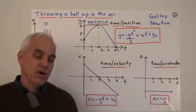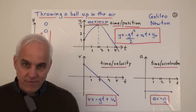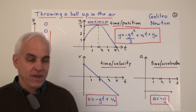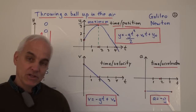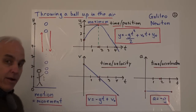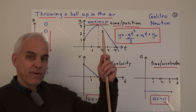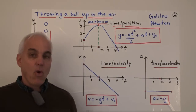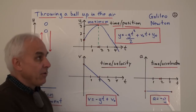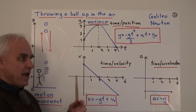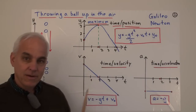A key historical motivation for calculus is to understand how things move — the study of motion. A very simple but important example is what happens to an object when you throw it up into the air. It's going up and coming down — that's a qualitative description. But we would also like a quantitative description: what actually happens on the way up and the way down? What about its speed? What about its acceleration?